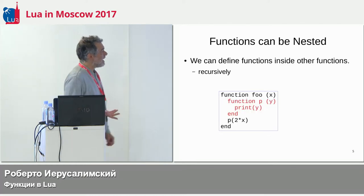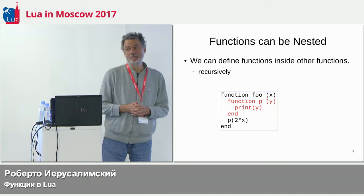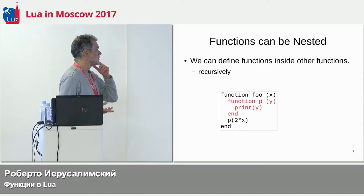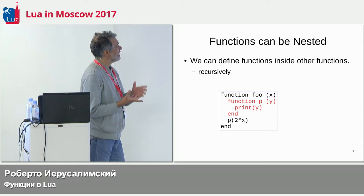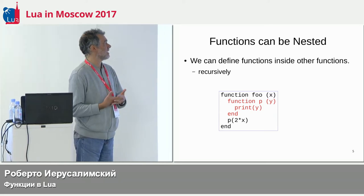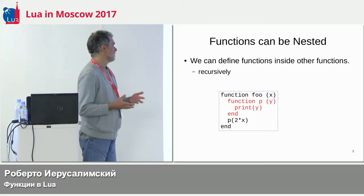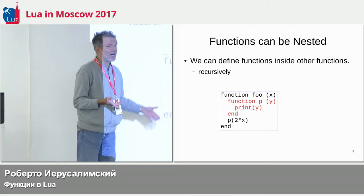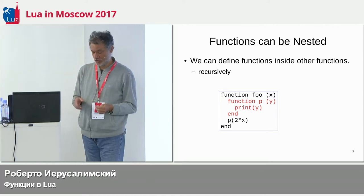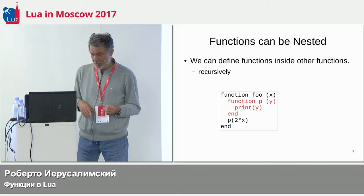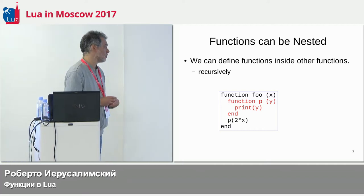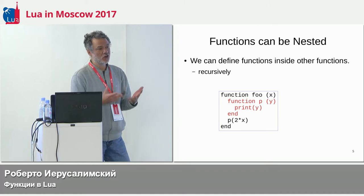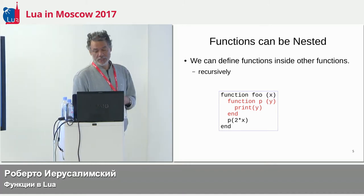The second important property we want is that functions can be nested — meaning we can define functions inside other functions. For instance, here I have a function foo, and inside that function I define another function p. And of course this is recursive, so inside p I can define another function, and so on, as many levels as I want.